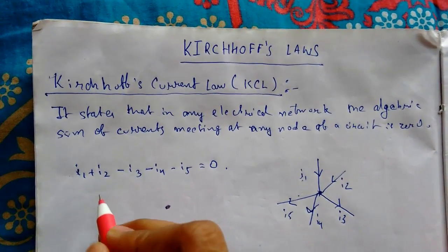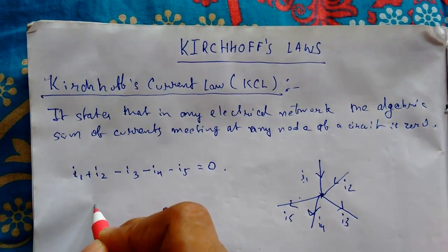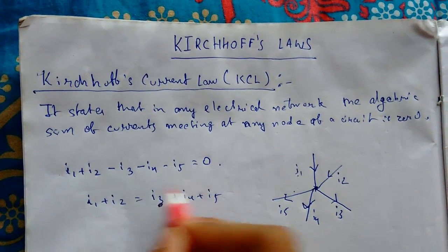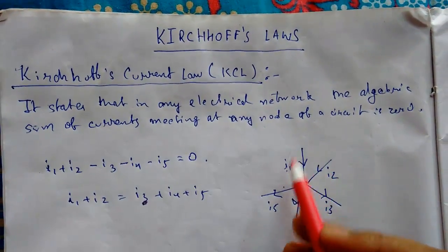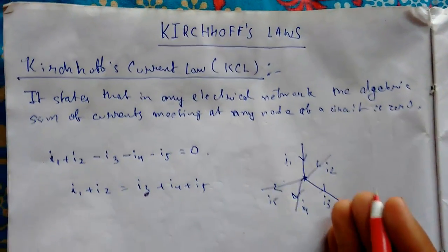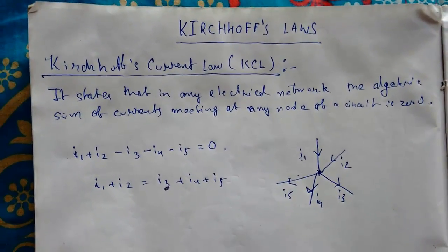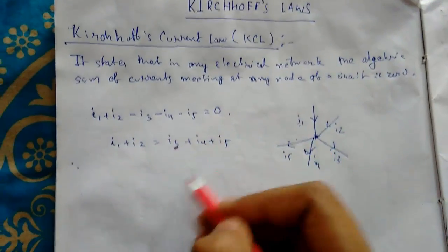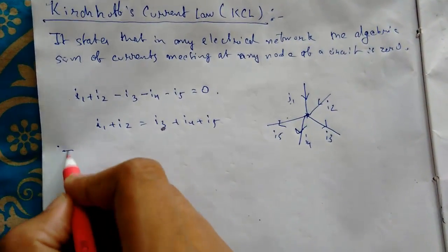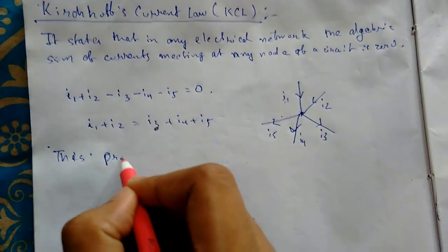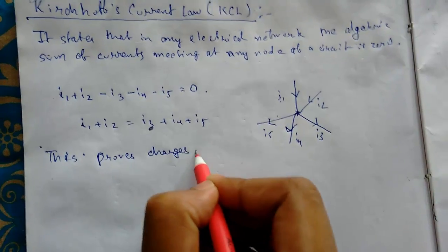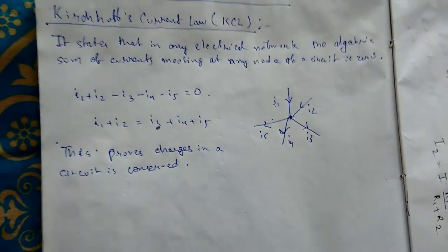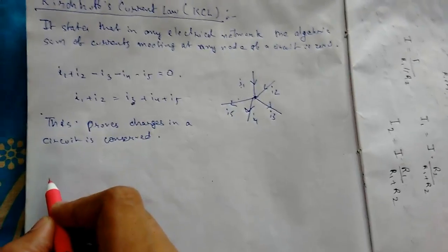To easily remember this, we rewrite it as i1 + i2 = i3 + i4 + i5, so currents entering are on one side and currents leaving are on the other side. KCL also proves the existence of conservation of charge — charge in a circuit is conserved.